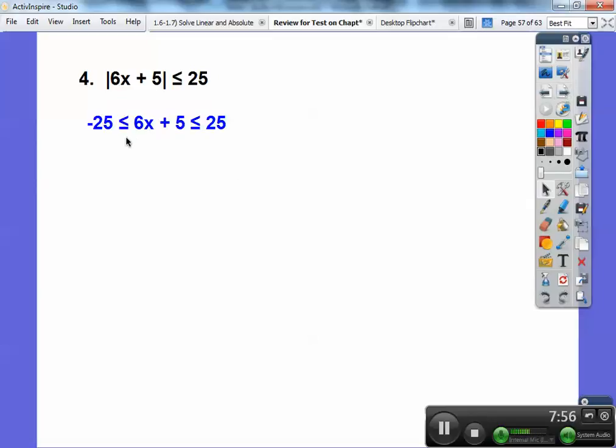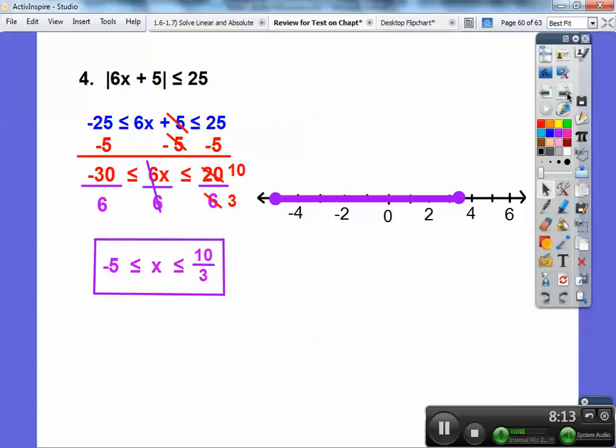When you have an absolute value and it's less than, then the -25 floats over here, the positive 25 floats over here, and this stuff goes in the middle. Then we're going to subtract 5 first, get rid of this 5 right here. Now I'm going to divide everything by 6, and then go ahead and graph it right there. Close circles on both of those.